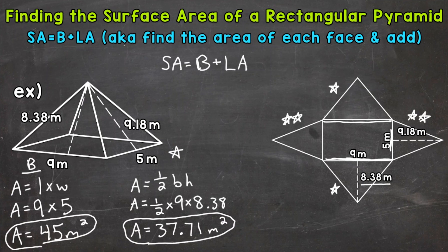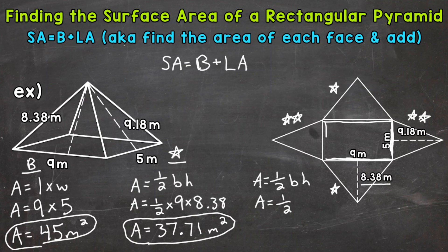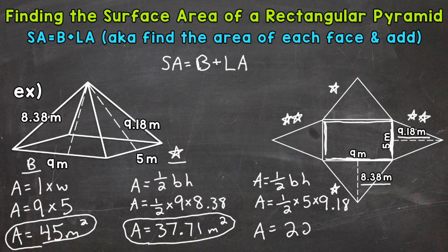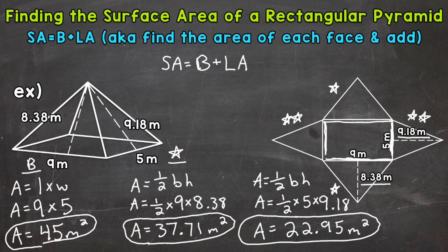I'll label this with one star so we know it represents the top and bottom lateral faces of the net. Now we move to the left and right lateral faces. Area equals one half times base times height. These lateral faces have a base of 5 meters and a height of 9.18 meters. That gives us an area of 22.95 square meters. I'll label this with two stars.